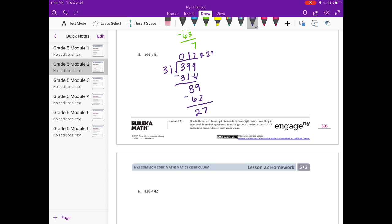And to check, we would do 12 times 31 is equal to 372. And 372 plus 27 should be equal to 399. And it is.